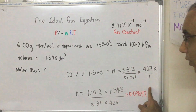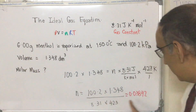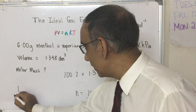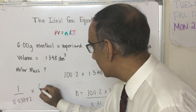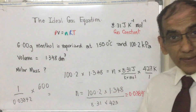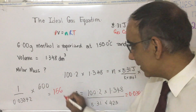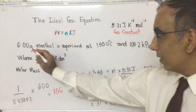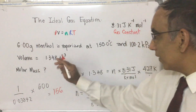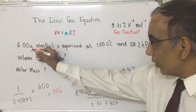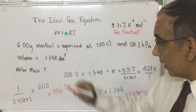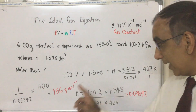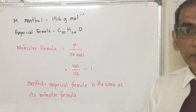If 0.03842 moles equals 6 grams, then the mass of 1 mole is 1 ÷ 0.03842 × 6, which comes to 156 with some decimals. Rounding to 3 significant figures — in keeping with the minimum significant figures in the data — the molar mass of menthol is 156 grams per mole.